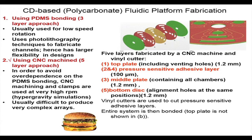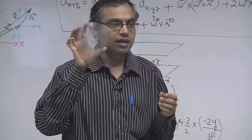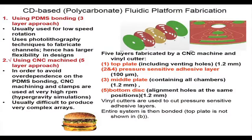How is the CD fabricated? It appears to be a single piece but there are actually five layers. The five-layer approach is not the only method — a three-layer approach using photolithography can also be used to make very intricate structures, but it is not a low-cost process. In the low-cost paradigm, we use a five-layer approach with a tabletop CNC machine.